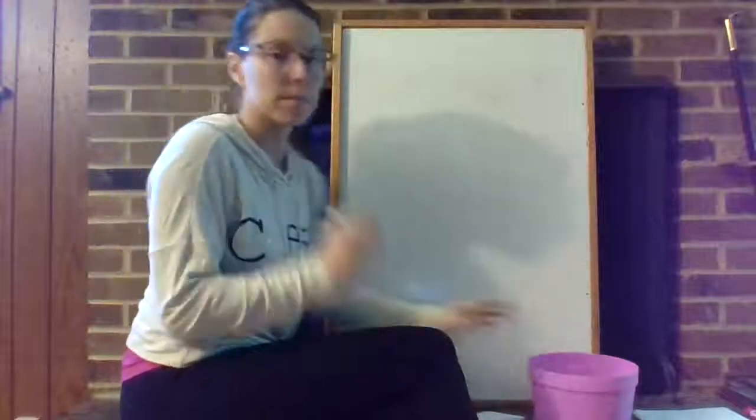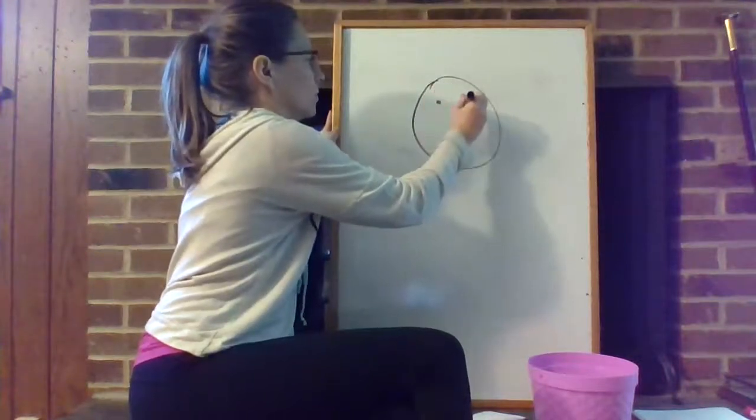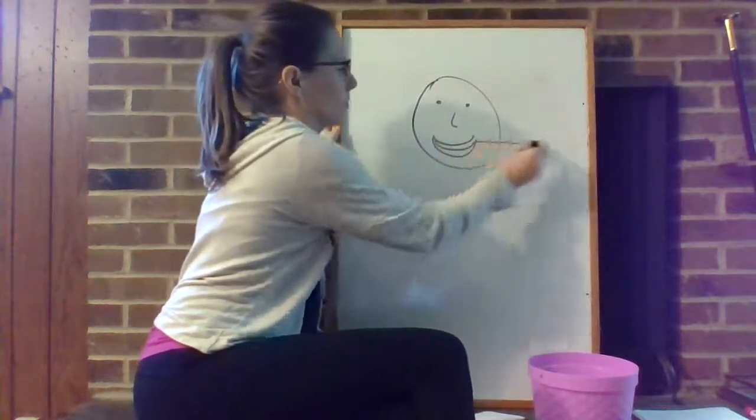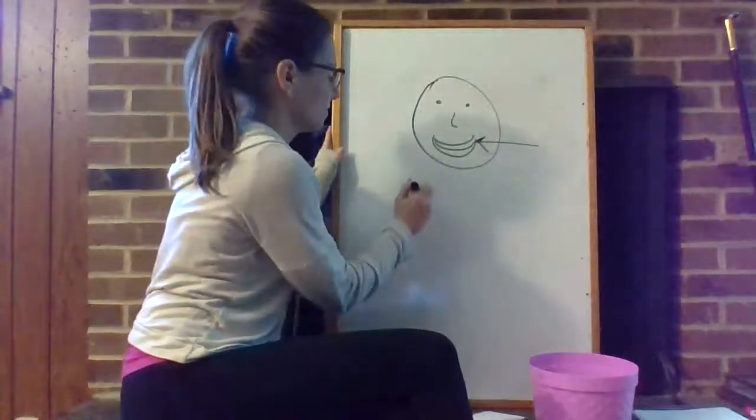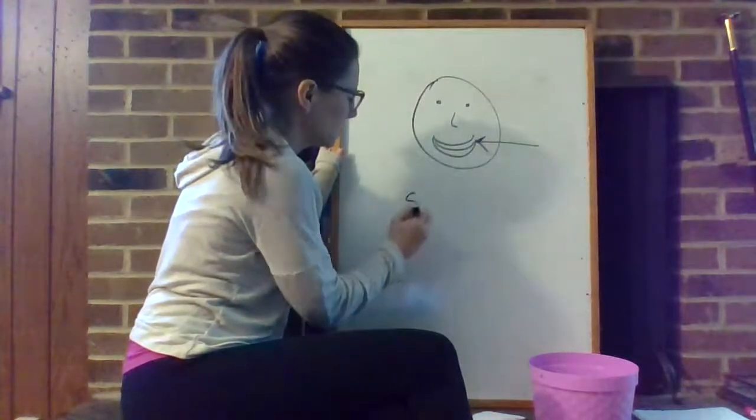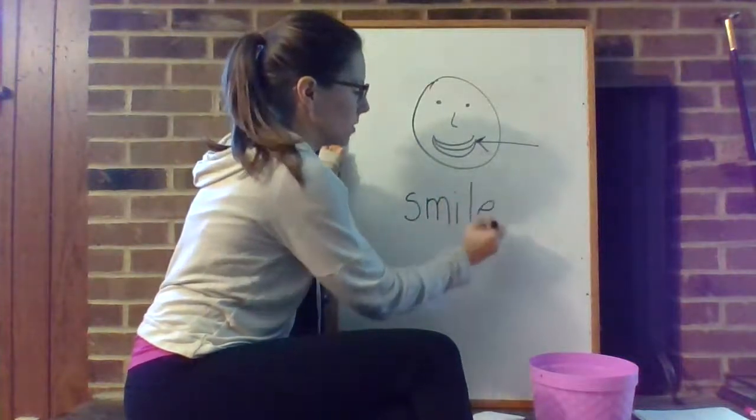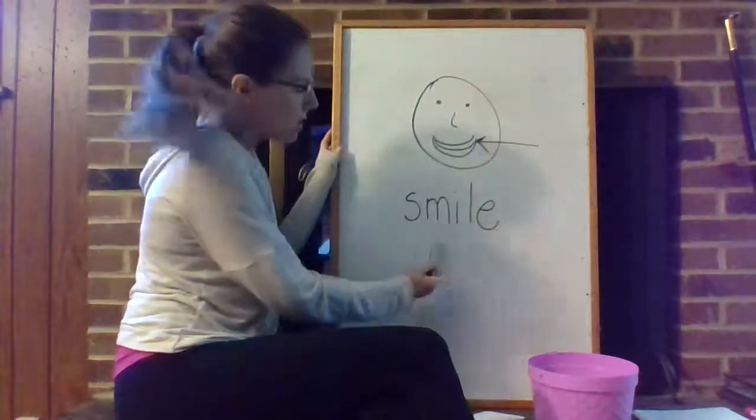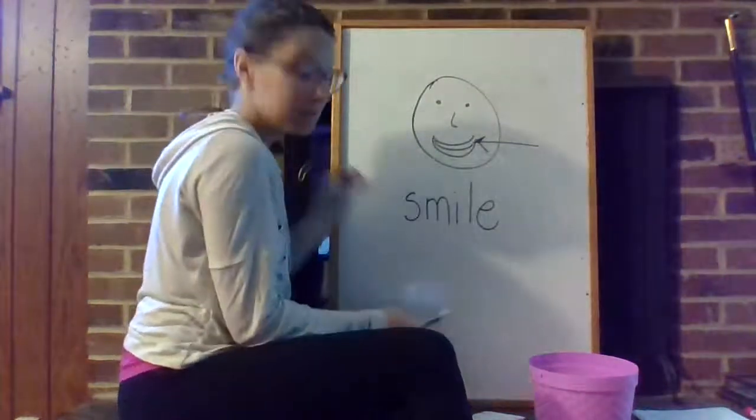We'll do a couple. I have two more. This one's gonna be fast. Ready? Long eye word. Did you get smile? Did you have all the letters? Both of these consonants, and this consonant, and both of those vowels? Smile.